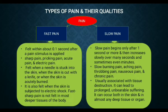Coming to the different types of pain, there are two types: fast pain and slow pain. Fast pain means a pain stimulus is applied and felt within 0.1 seconds. It is also known as sharp pain, pricking pain, acute pain, and electric pain. Examples include a pin or needle stuck in skin, a knife cut in skin, a burn, or electric shock. Fast pain is mainly felt in the skin.